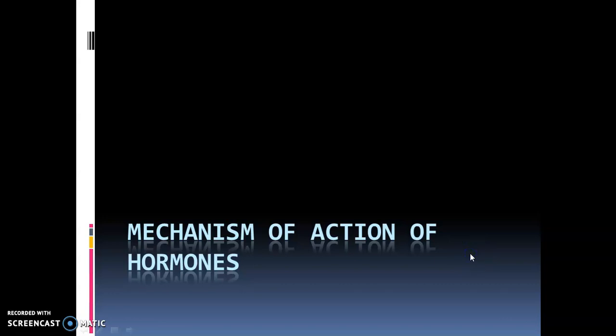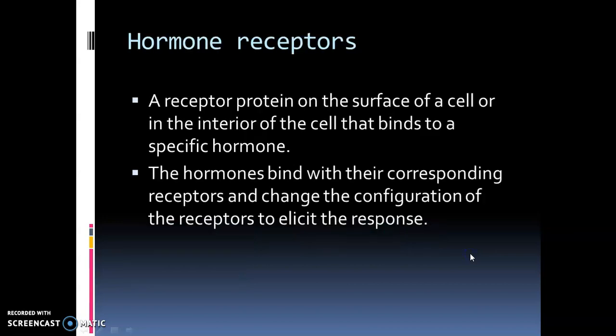Today we are going to study about the mechanism of action of hormones. Hormones are secreted by the endocrine glands and carried by the blood to distantly located target organs. The target organs or target cells are capable of responding to hormones because they have certain receptors which can bind with these hormones. The receptor proteins are present either on the surface of the plasma membrane of the target cells or in the cytoplasm.